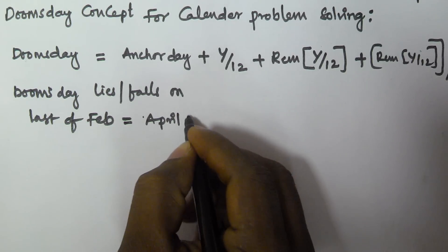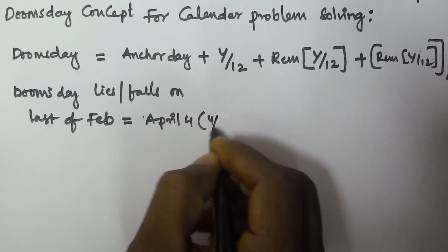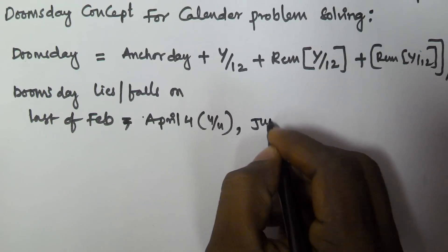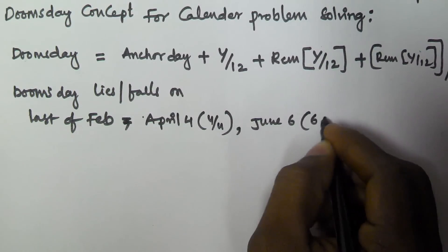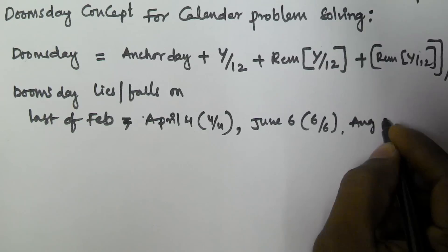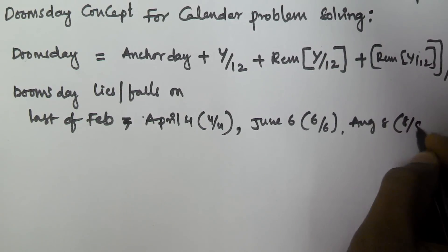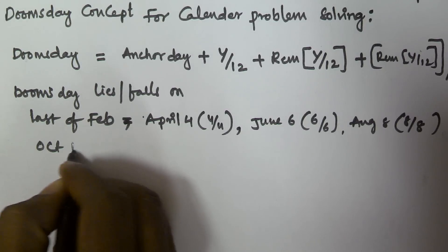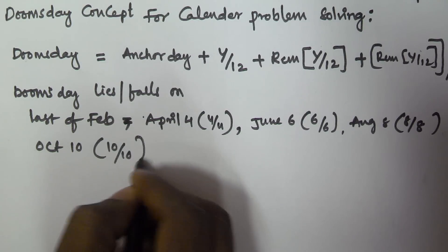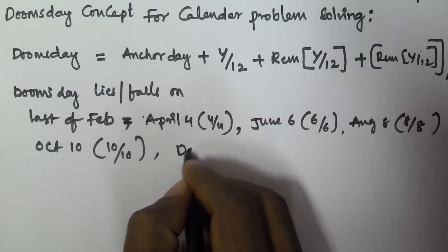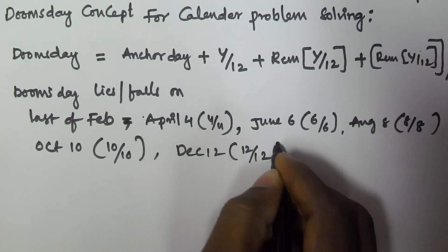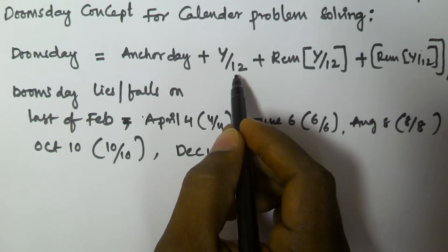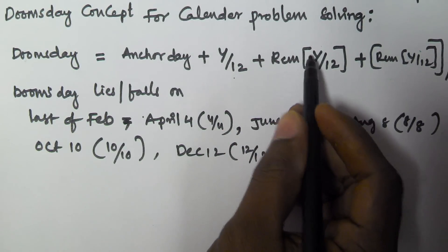The Doomsday also falls on April 4th — that is 4/4 — June 6th — that is 6/6 — August 8th — that is 8/8 — October 10th — that is 10/10 — and December 12th.